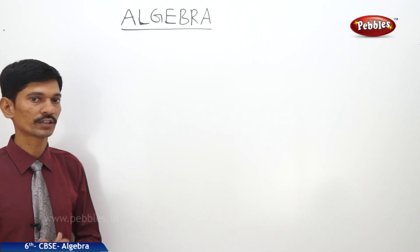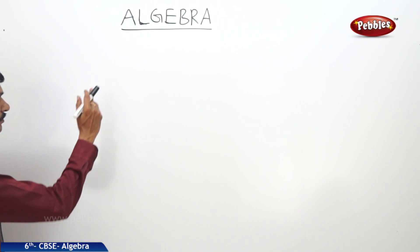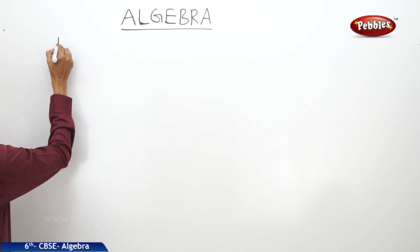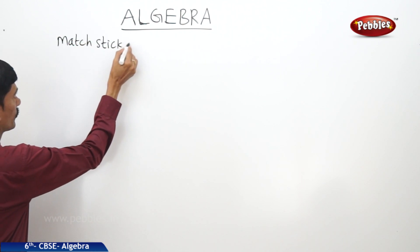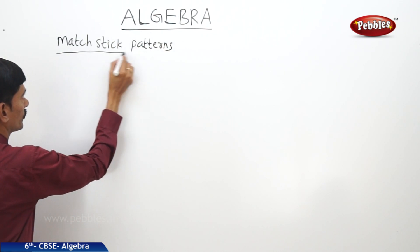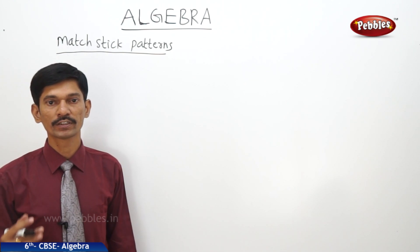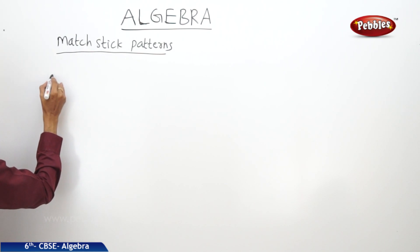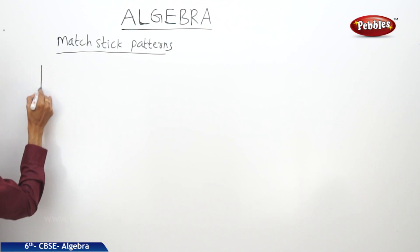Now let us start the next chapter: algebra. Before going to learn algebra, we will see some mathematics patterns. If you arrange the matchsticks in a systematic way, we get the English alphabet L. Now how many matchsticks are required to make the letter L?